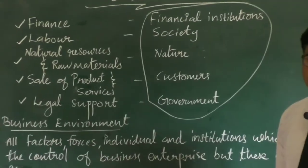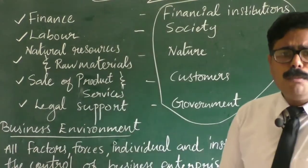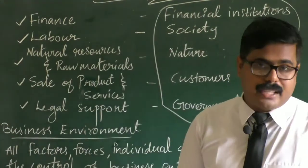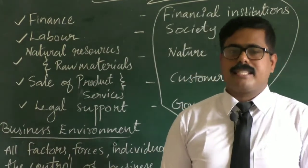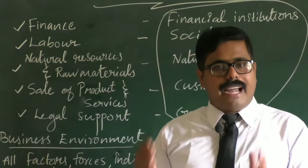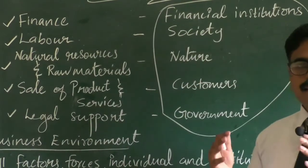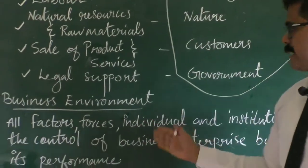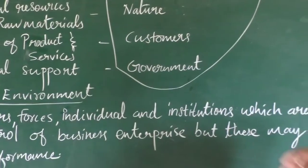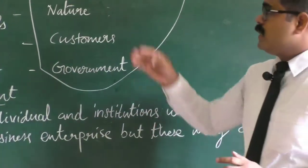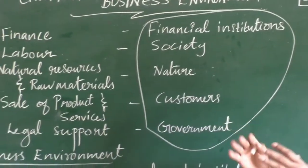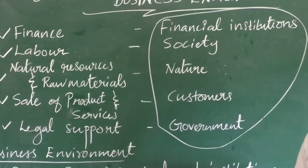All these factors are the components of a single concept called business environment. Environment means surroundings, so in simple words, business environment is the surroundings in which a business exists. It may include factors, forces, individuals or institutions. Let us define it: all factors, forces, individuals and institutions which are outside the control of a business enterprise but may affect its performance. These include financial institutions, society, natural resources, customers and government — all outside the control of the business organization.